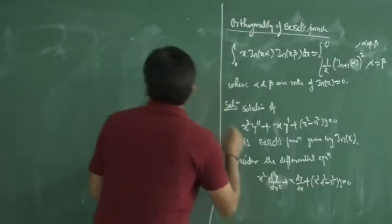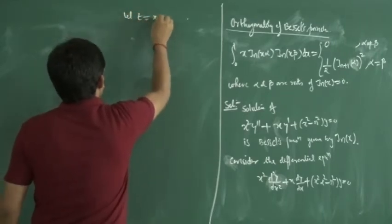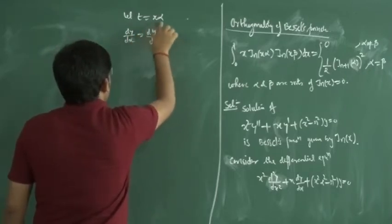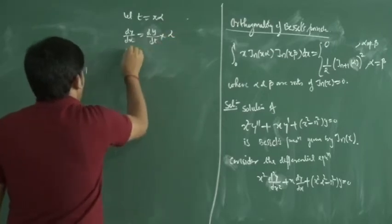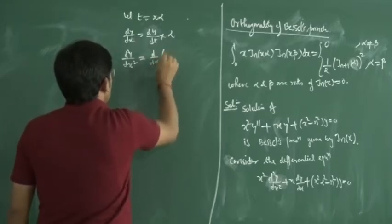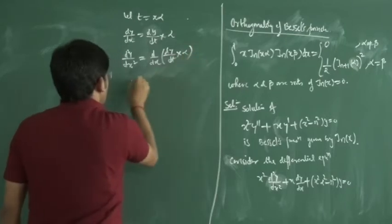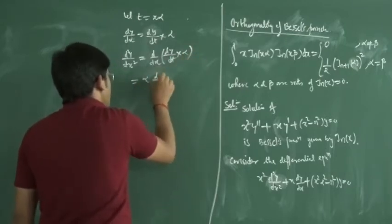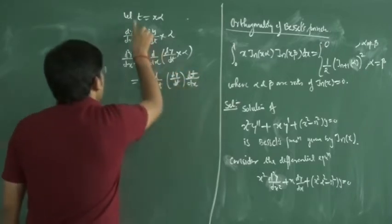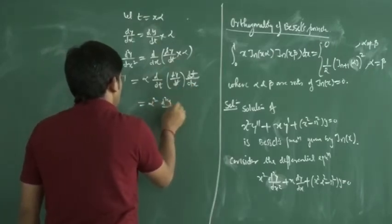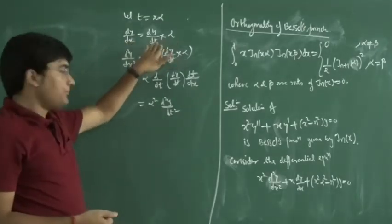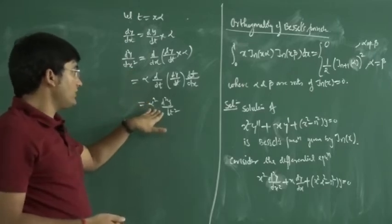It is easy to prove this. Let t = xα. Then dy/dx = (dy/dt)(dt/dx) = α(dy/dt), and d²y/dx² = α²(d²y/dt²). Since α is constant, we take it outside. So dy/dx = α(dy/dt) and d²y/dx² = α²(d²y/dt²).